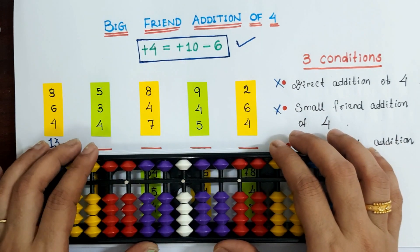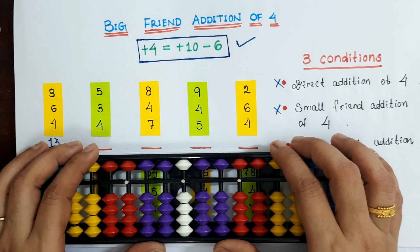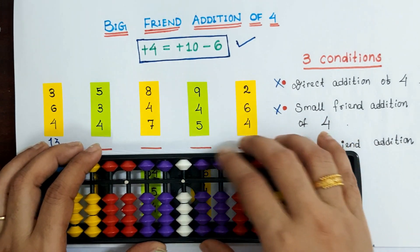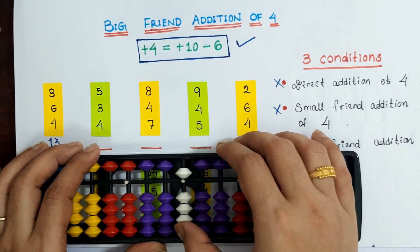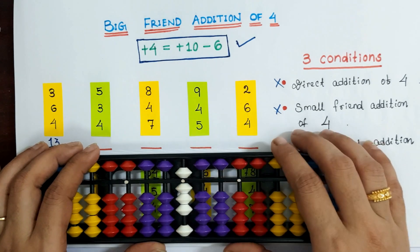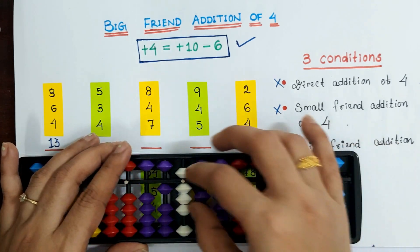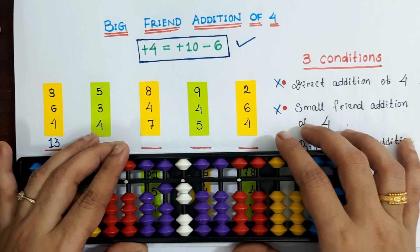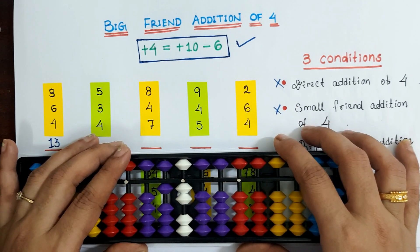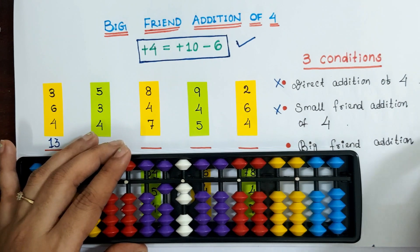Next example: 5 plus 3 plus 4. Using the formula, plus 4 is plus 10 minus 6. Answer is 12.